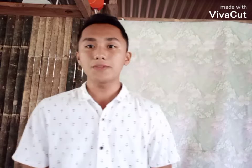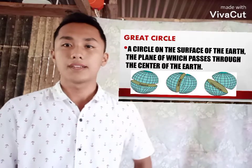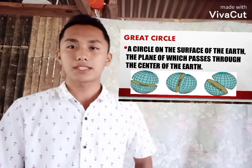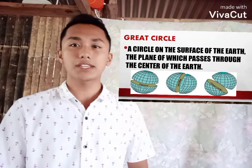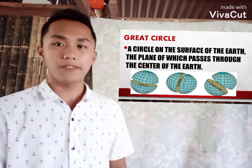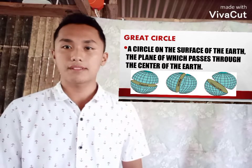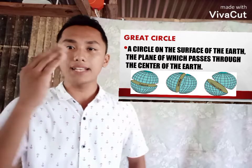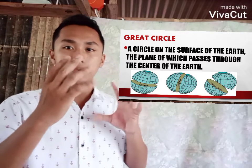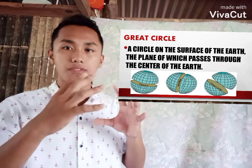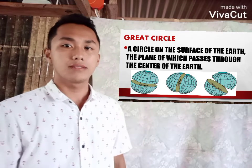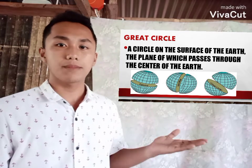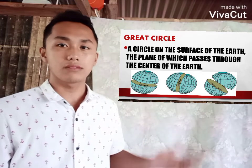Now, let's define what is a great circle. A great circle is a circle on the surface of the earth where the plane passes through the center of the earth, just like the picture shown.